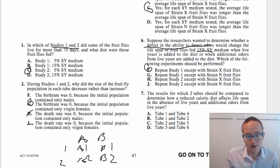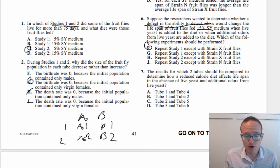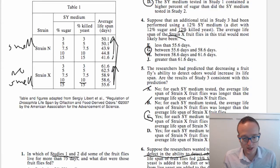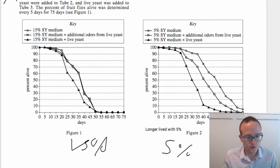Once you break down these different studies into their basic components, it's like, oh, you know, study one is about 15%, study two is about 5%, study three is about strain X versus strain N. Results for which two tubes should be compared to determine how a reduced calorie diet affects lifespan in the absence of live yeast and additional odors from live yeast? Okay, a couple things: reduced calorie, and then in the absence of live yeast and additional odors from live yeast.